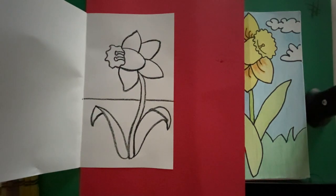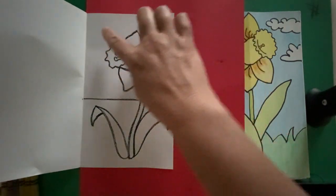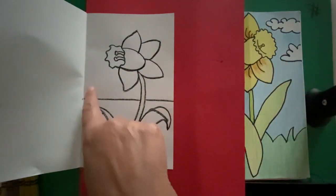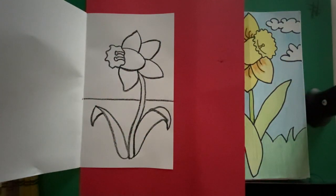Now, you can add some details if you want. If you want to add some clouds or a sun up here. For mine, I'm not going to add any today. But you can add whatever details you'd like to make your picture unique and special to you. All right. Now, the next part. The best part is to add your color.